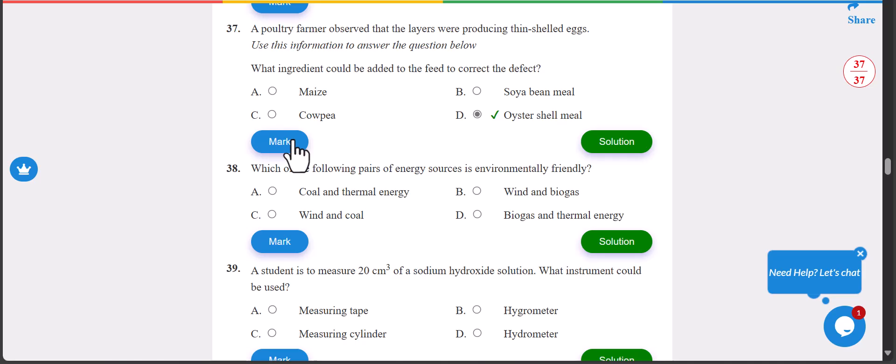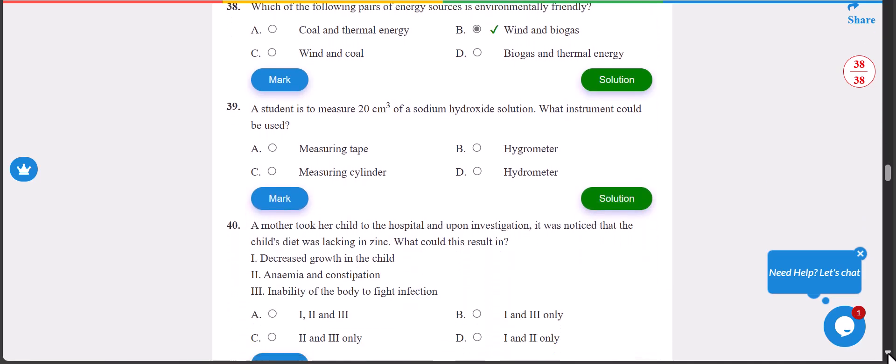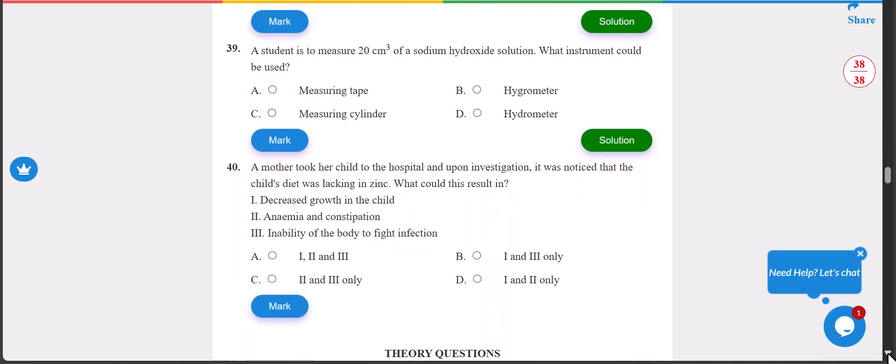Number 38: which of the following pairs of energy sources is environmentally friendly? We have B, which is wind and biogas. 38 is B, wind and biogas.